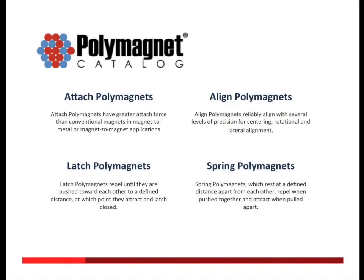We have designed a range of polymagnets and put them in the polymagnet catalog. The functionality of polymagnets falls into four categories. I'm going to focus on the top two as I transition into the case study. Attached polymagnets attach to metal like conventional magnets, but with higher attach strengths and different shaped force curves. Aligned polymagnets add another dimension — they also exhibit precision alignment, either centering, rotational, or lateral. This stands in contrast to conventional magnets that don't care about orientation as long as north is attracted to south.